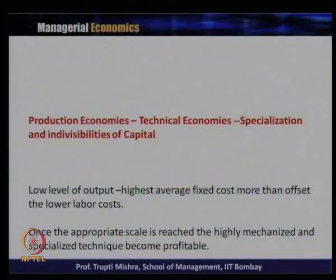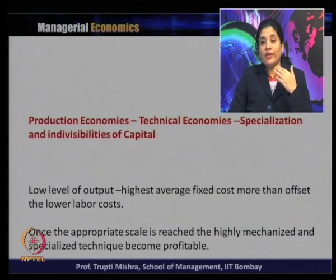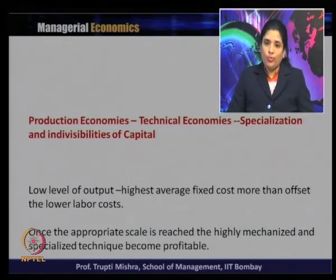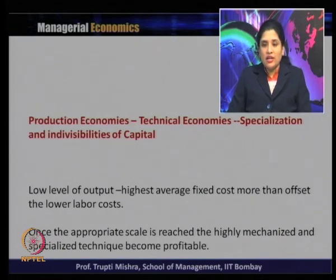These are all high overhead costs, but when it comes to average cost, it is lowest in terms of productivity and performance. At a low level of output, higher average fixed cost more than upsets the lower level cost. But once the appropriate scale is reached, the highly mechanized and specialized technique becomes profitable, because at large scale the fixed cost gets spread over a larger level of output.